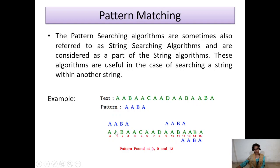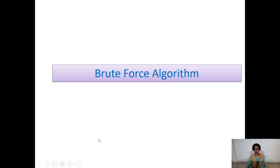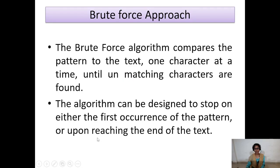In this way we find the pattern in the text. To do this, we have three algorithms: the Brute Force algorithm, the Boyer-Moore algorithm, and the Knuth-Morris-Pratt (KMP) algorithm. In the Brute Force algorithm, we compare the pattern to the text — the first character of the pattern to the first character of the text — until the match is found.